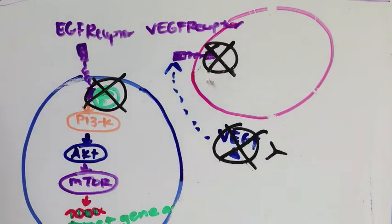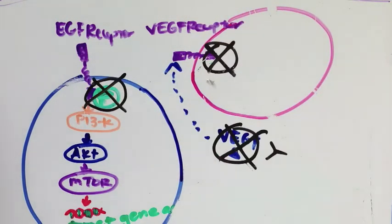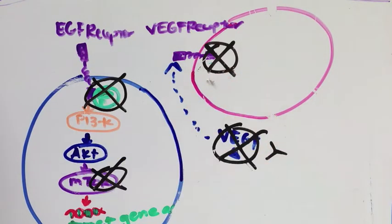On the tumor itself, erlotinib is an EGFR tyrosine kinase inhibitor used in the treatment of pancreatic and non-small cell lung cancer. Further downstream signaling is also inhibited through blockage of mTOR by Temsirolimus and Everolimus, which are first and second line agents for renal cell carcinoma.